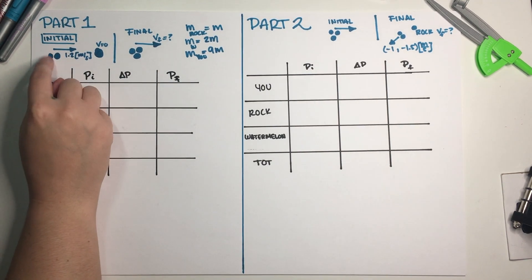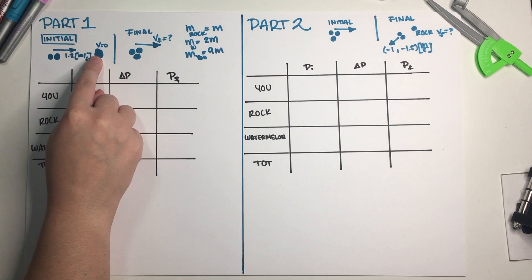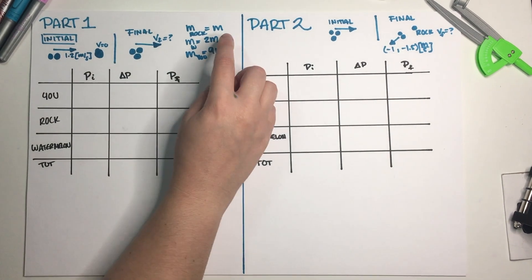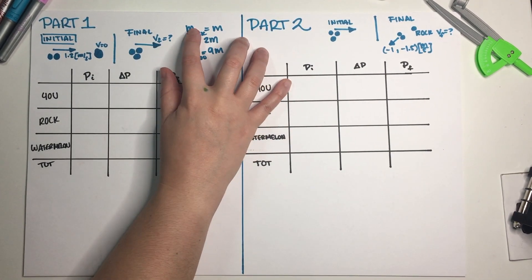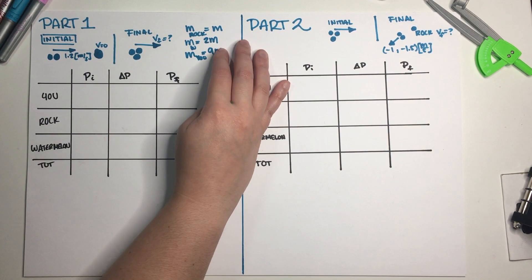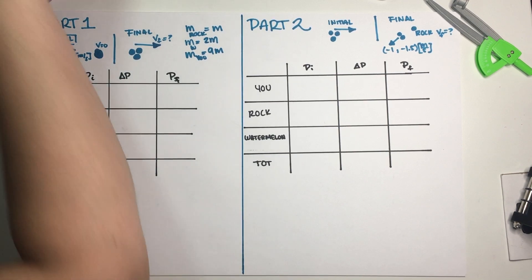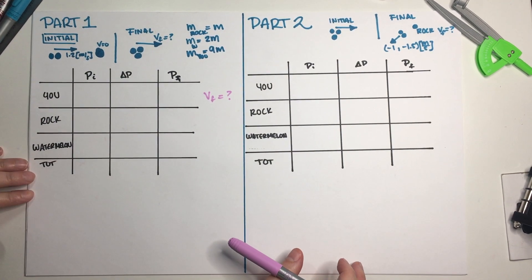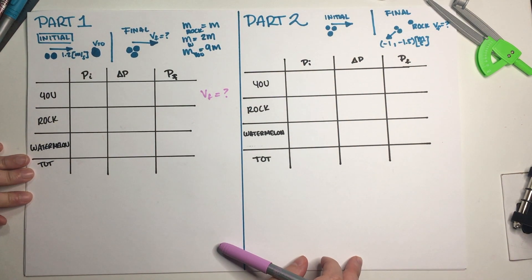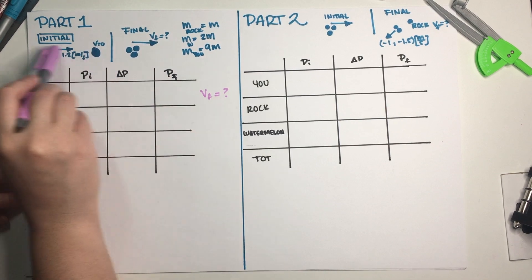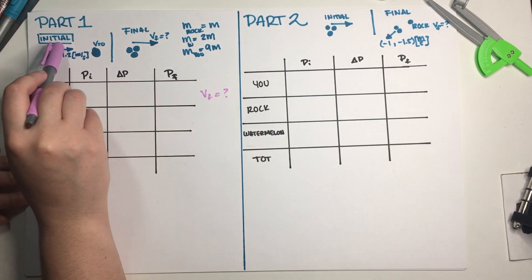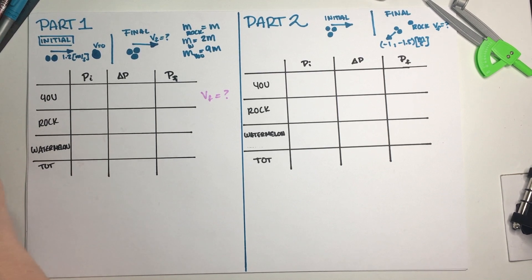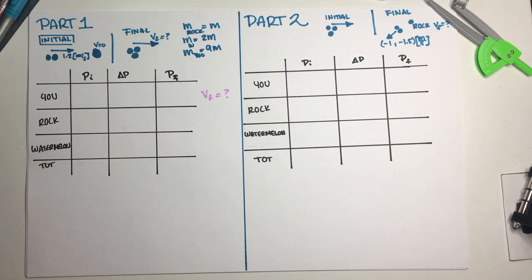In part one, you and the rock are moving and the watermelon is not. You then grab the watermelon, so now three objects are stuck together and still moving. Mass of the rock is m, mass of the watermelon is 2m, and your mass is 9m. We need to solve for your final velocity. Since all motion is happening on the x-axis, there's no need to separate into x and y components — I just need to multiply masses times velocities to get momenta.